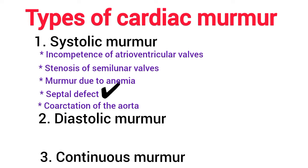Number five is coarctation of the aorta. Coarctation of the aorta is a congenital disorder characterized by the narrowing of a part of the systemic aorta. A loud murmur is produced during systole and it is also heard in the early part of diastole.